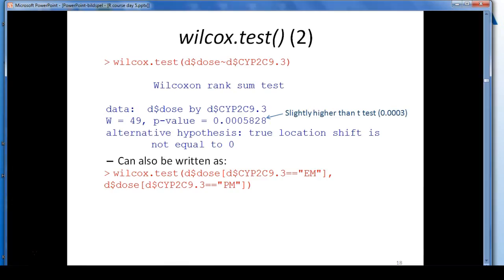If you're going to perform a Mann-Whitney U test or an unpaired Wilcoxon test, you simply write wilcox.test and then the column of data set containing the outcome data tilde the column containing the group data, just as for the T-test. And the result, as you can see here, looks sort of like the T-test output.